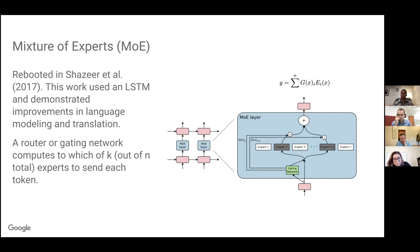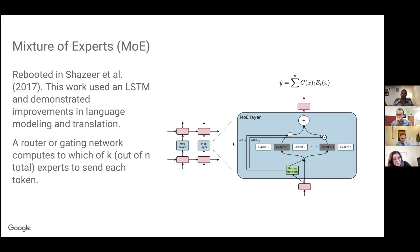These models are really co-designed to work well with modern hardware. In the MOE layer, a token X comes in as an embedding representation, and there's a learned gating network — typically a dot product then a softmax — which produces a probability for each of N experts. The token is sent to the gating network, which chooses one or more experts to send the token to. The token is then communicated to those experts, computation is applied, and it's scaled by the router probability to allow training, then passed to the next layer.